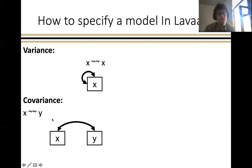To specify the covariance between two different variables, you would also use two tildes, and on the right-hand side you would write the name of that second variable, in this case y, which as a path diagram would reflect this two-headed arrow between x and y, and in the standardized case would of course reflect the correlation between these two variables.